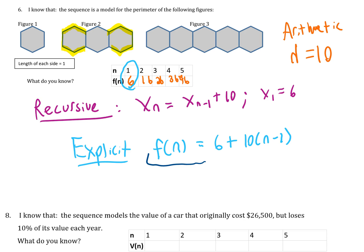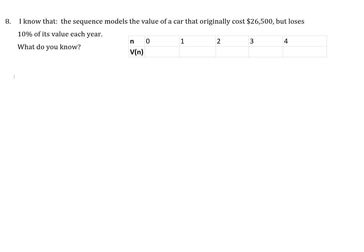In scenario 8, we've got a car that originally cost $26,500 but loses 10% of its value each year. We have a scenario where it's losing 10%, which means it keeps 90%. Anytime we're dealing with percent value, that's going to be a geometric sequence. In this case, r = 0.9, which is the decimal representation of 90%.